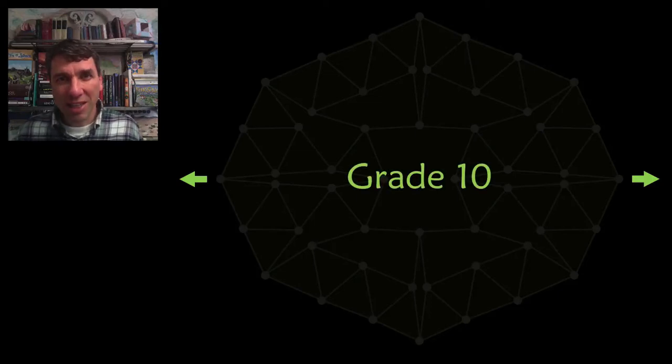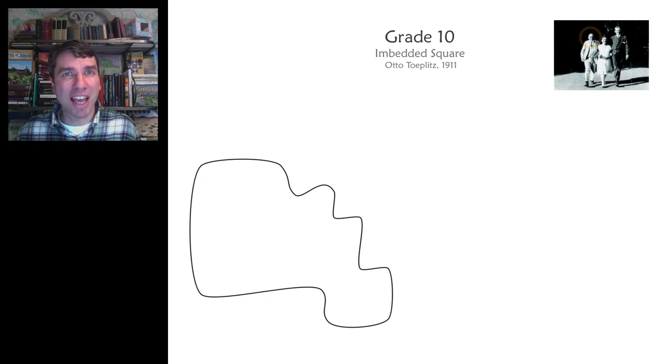The unsolved problem for grade 10 is from 1911. It's Otto Topitz's embedded square problem. No matter what loop that you draw, is it always possible to find a square such that the corners of the square lie on the loop.